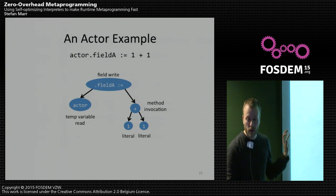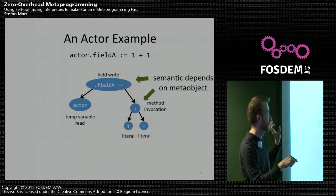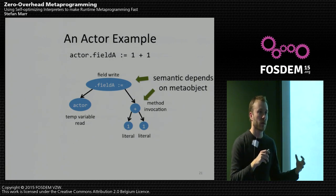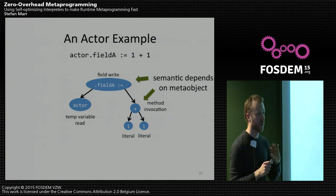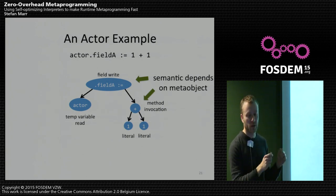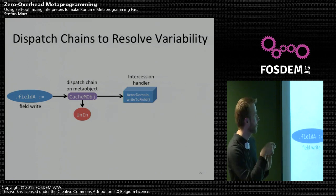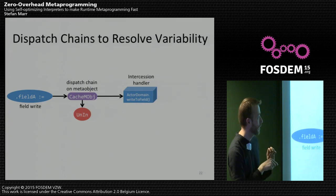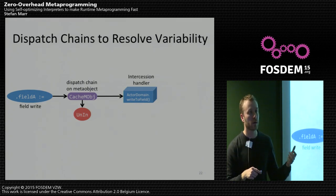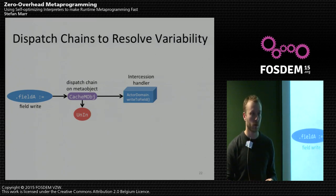If you have an example using the actor meta-object protocol and a field-write node, there are at least two parts where it will definitely apply — and all field-write accesses. For them, it's not statically known what the semantics is, so we cannot just emit byte code for writing the field. We first have to resolve what happens on the meta-object level. The solution is applying those caching and dispatch chain tricks again: we observe what kind of meta-object actually comes along, see it's always an actor, and then just inline that write-to-field — providing enough knowledge to compilers to optimize it.